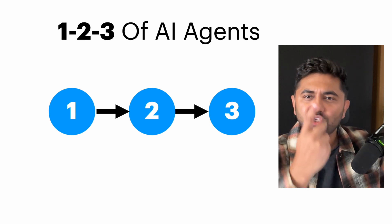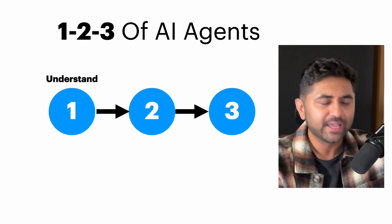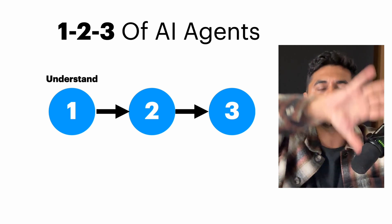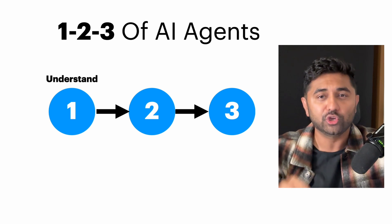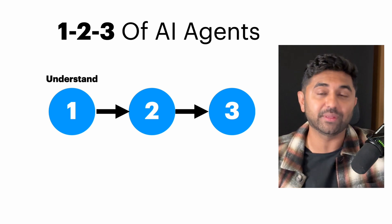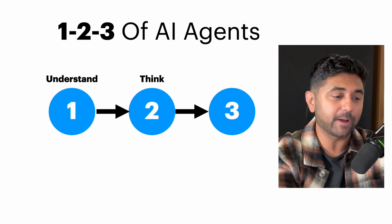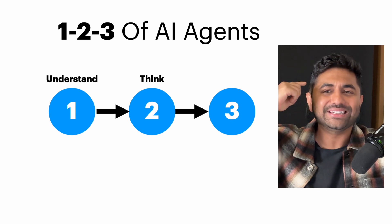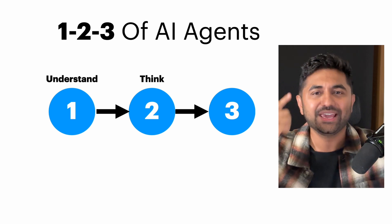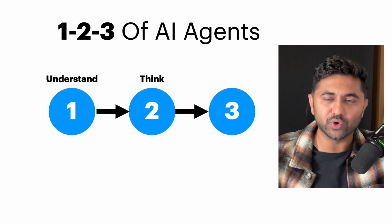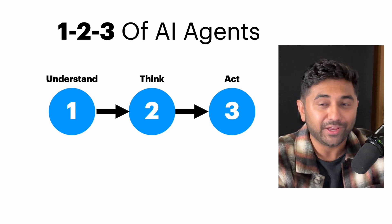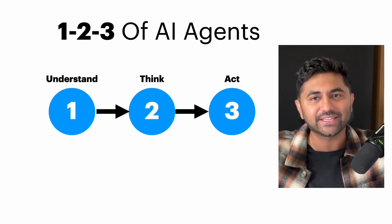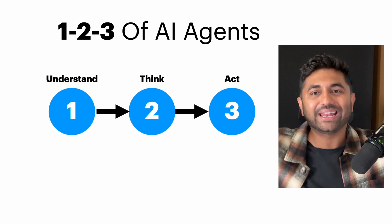Let me give you the one, two, and three of an AI agent. Number one: they understand your situation — they have the data and the rules. You can put limitations or give it more freedom, that's up to you. Number two: they make logical decisions — they determine what is right, what is wrong, and what they should do. Number three: they actually act.